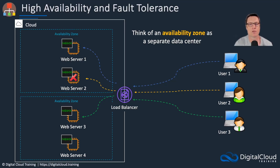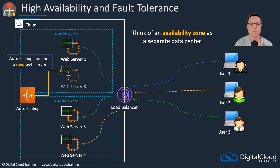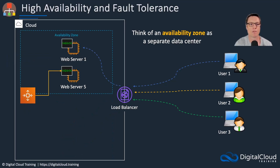Now, what if web server two fails here? If it fails, the connection is broken, but that user is redirected to web server four — so no problem at all. There is a little bit of service interruption, but not too much. AWS Auto Scaling is going to replace that web server, so we've got the number of web servers we want back again. Auto Scaling can automatically ensure that there's always enough to service whatever the load is for the application at that point in time.